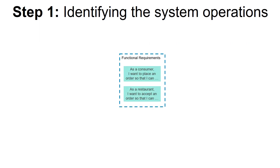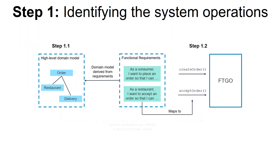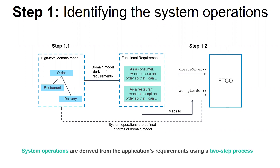The starting point is the application's requirements, including the user stories and their associated user scenarios. The first thing to do is to create the high-level domain model consisting of the key classes that provide a vocabulary with which to describe a system operation. After that, we have to identify the system operations and describe each one's behavior in terms of the domain model. We can say that the system operations are identified and defined using this two-step process.